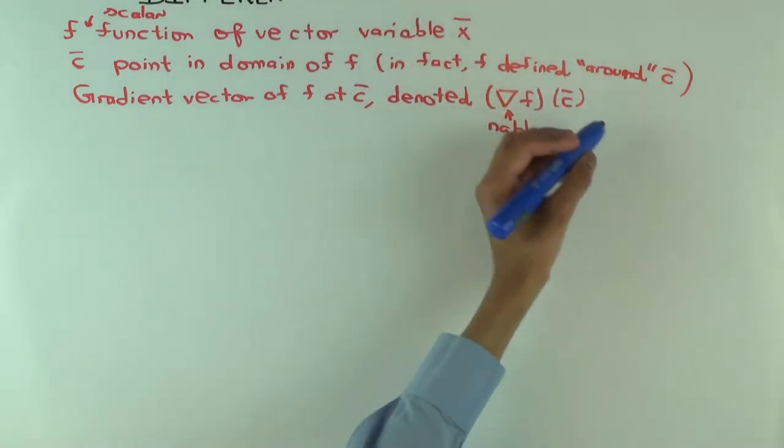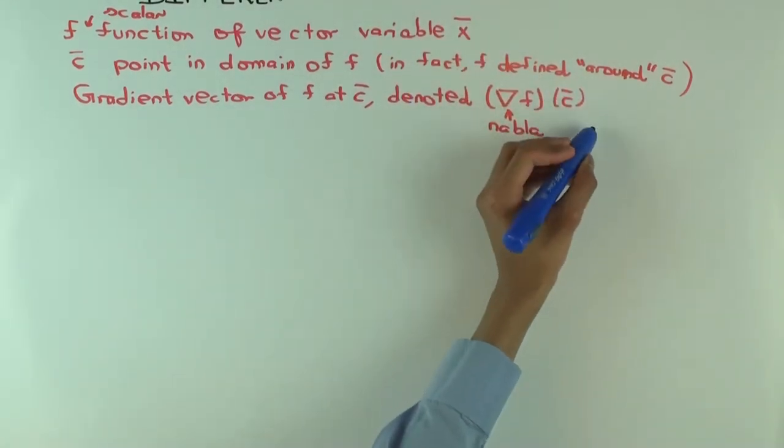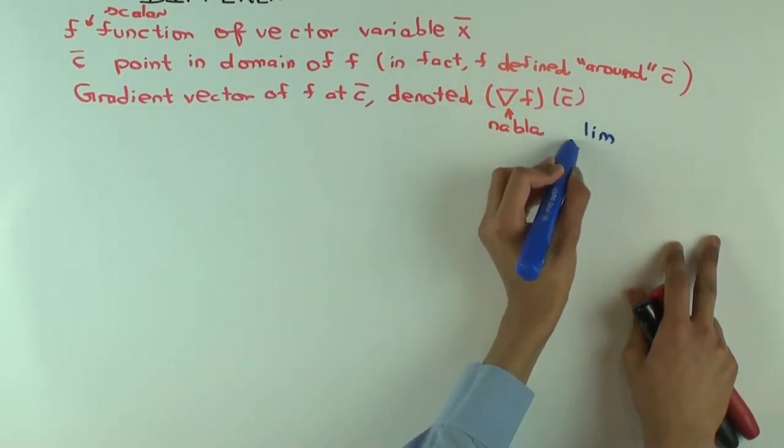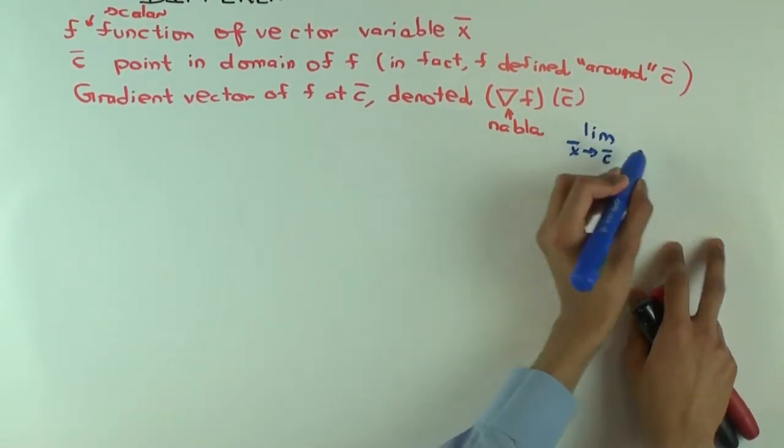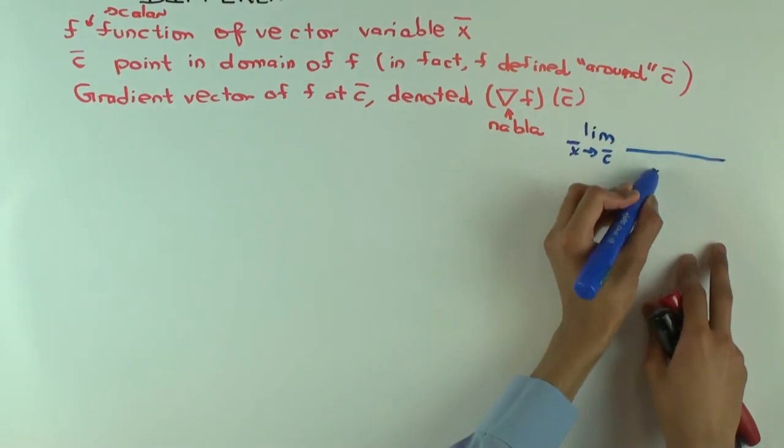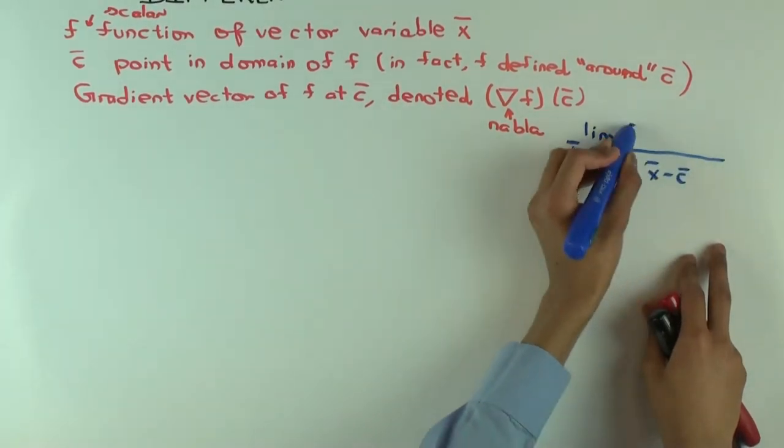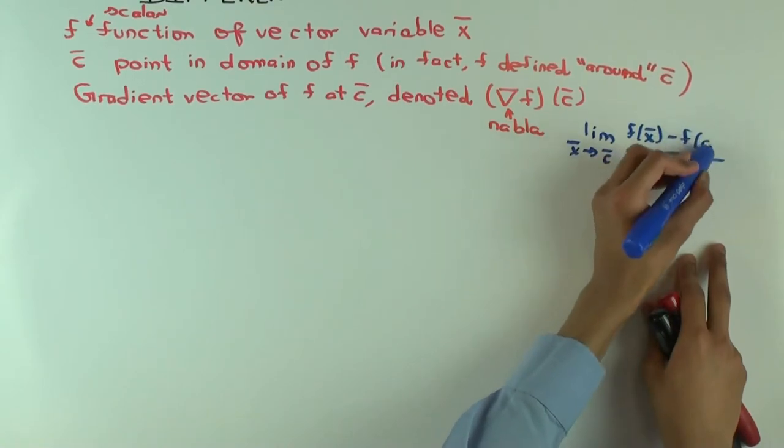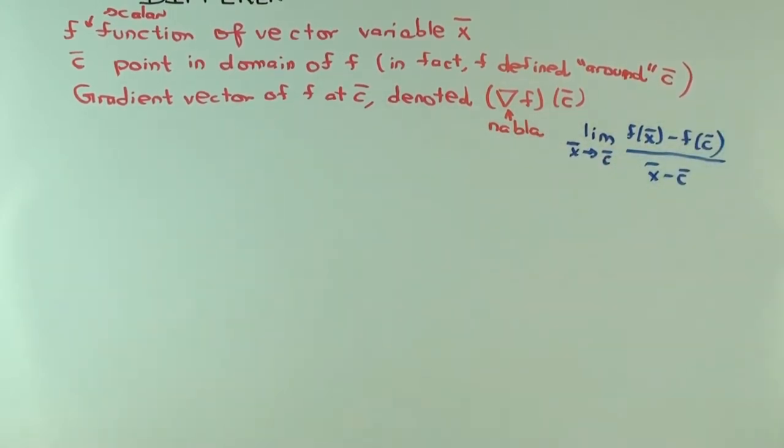So, a naive attempt would be something like, x bar approaches c. Well, I was secretly hoping that's not a naive approach, because that's my approach. Yeah, but okay, what's the problem with doing this?